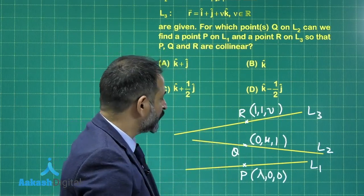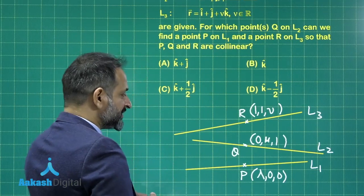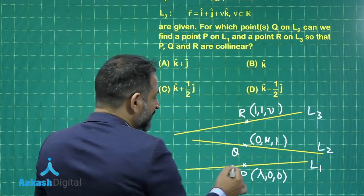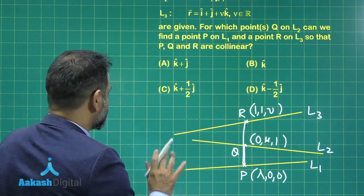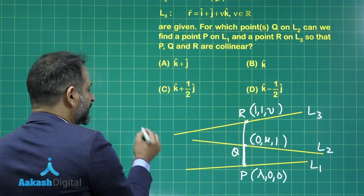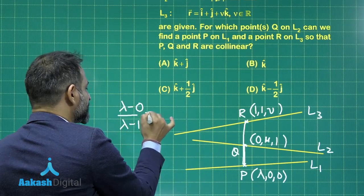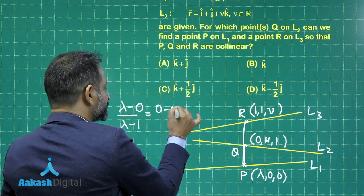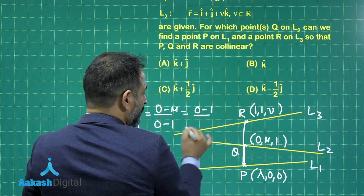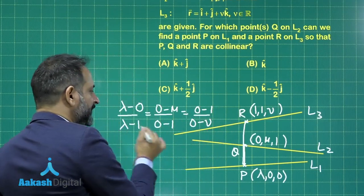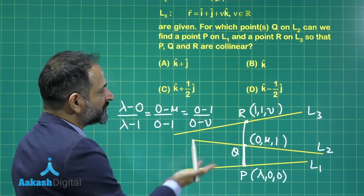Now, these three points are given as collinear. We have to find Q for which P and R exist on L1 and L3. You know that if the points are collinear, the direction ratios of line PQ and line PR must be proportional. The direction ratios of PQ will be (λ minus 0) and PR will be (λ minus 1), which equals (0 minus μ)/(0 minus 1) and (0 minus 1)/(0 minus ν).